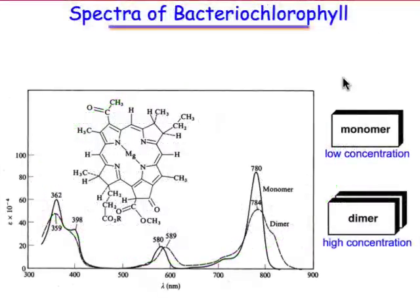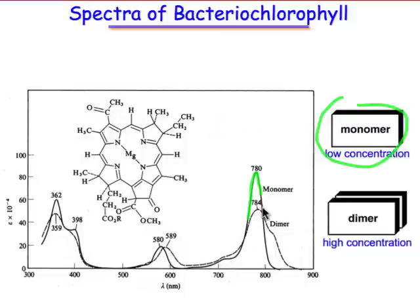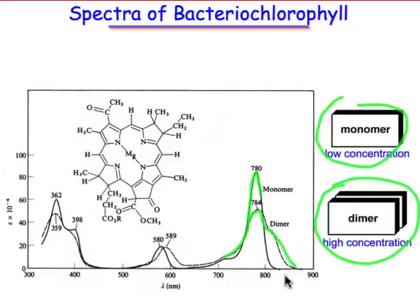Another example of chromophore-chromophore interactions shows up in the absorption spectrum of bacteria chlorophyll. At low concentration, the molecule behaves like an isolated, independent species, and it has a very sharp absorption at 780 nanometers. At higher concentration, the molecule begins to aggregate or associate into stacked dimers, and consequently one sees a change in the absorption spectra — a broadening and even the appearance of new bands evidenced by a shoulder.